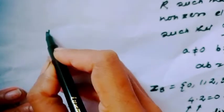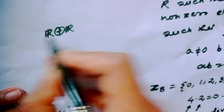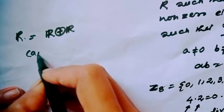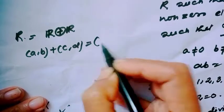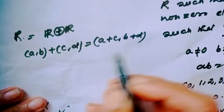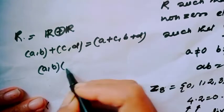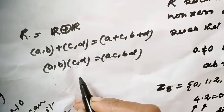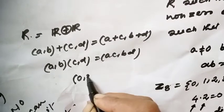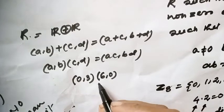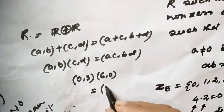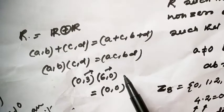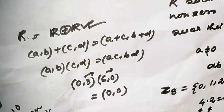Another example: consider the direct sum Z6 ⊕ Z6. The operations are: (a,b) + (c,d) = (a+c, b+d) and (a,b)·(c,d) = (ac, bd). If you pick the two elements (0,3) and (6,0), their multiplication gives (0,0), the zero element. So these two are zero divisors in this ring.